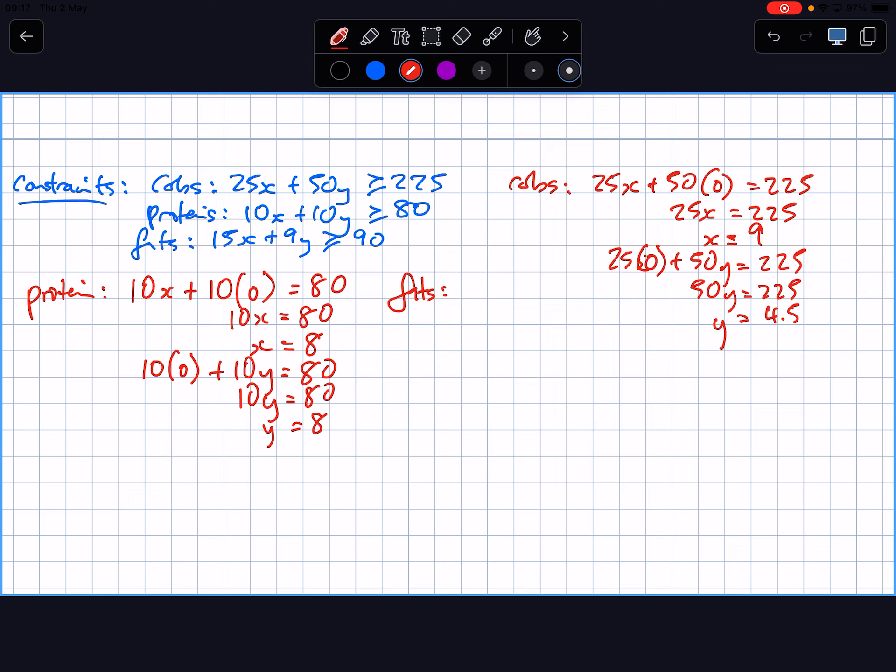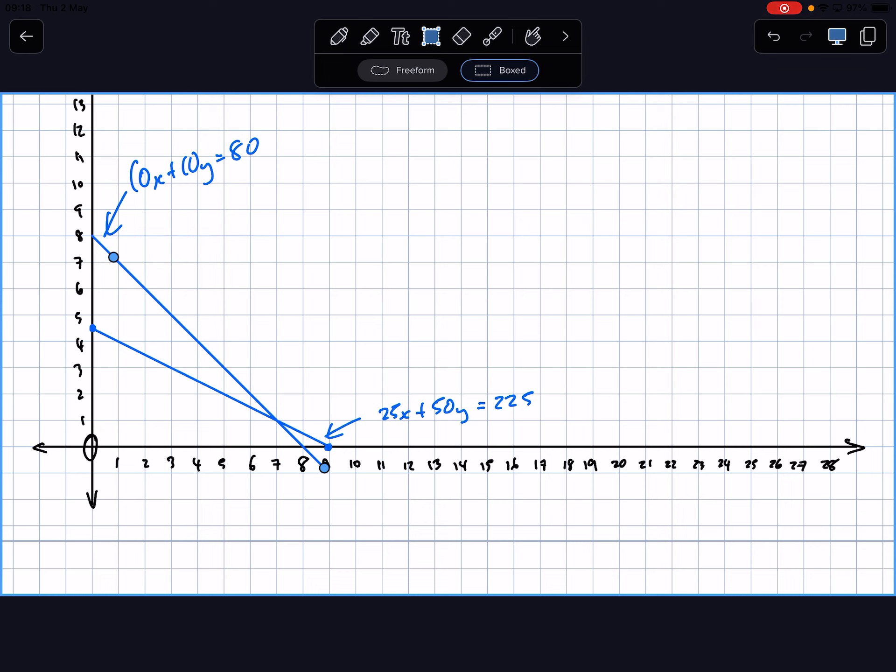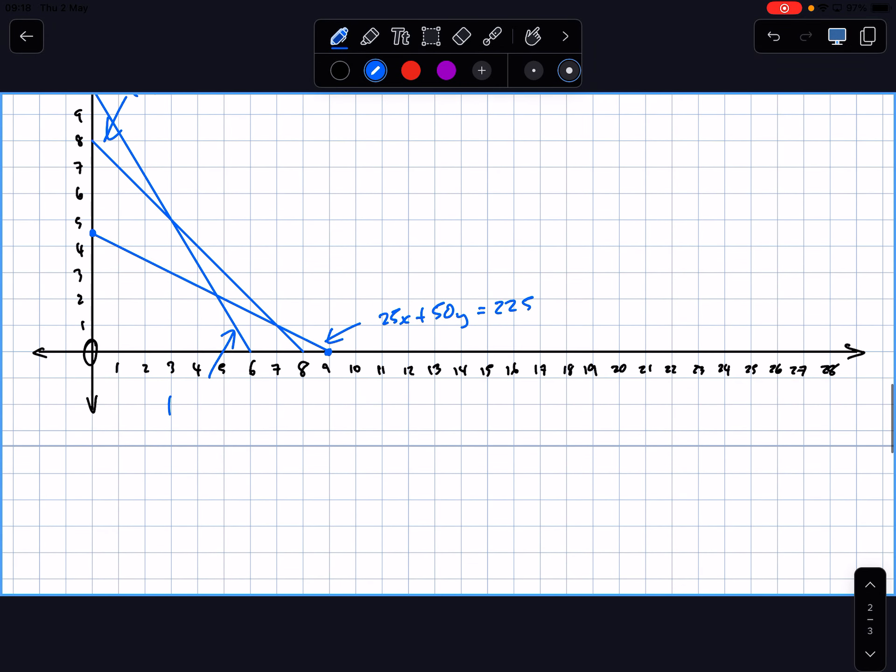Anyone to call out to me how do I draw this line? Fats. 15X equals 90. X is going to be 6. 15 nothings plus 9Y equals 90. Y is going to be 10. So X 6, Y 10. Label that 15X plus 9Y equals 90.